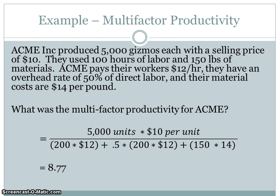Our numerator will be 5,000 units times $10 per unit. The denominator has three components: labor hours multiplied by the labor rate, overhead as labor times 0.5, and material usage multiplied by $14 per pound. The multi-factor productivity comes out to $8.77, meaning for every $1 of input, we were able to generate $8.77 of output. To determine if that number is good, we'd compare it to our goals, past history, or industry benchmarks.